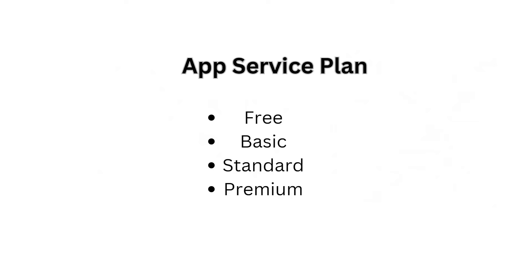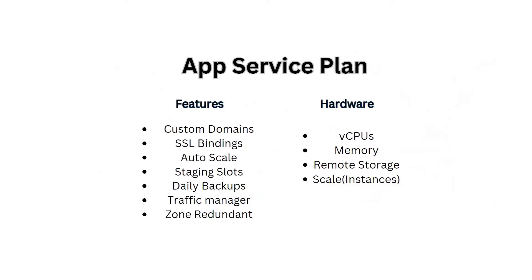Here App Service plan comes into the picture. Azure will offer different plans for our applications — for example, free App Service plan, basic App Service plan, standard, and premium. Based on the plan you choose, you will get certain hardware resources and features. If you choose a basic app service plan, you may get less CPU and memory and fewer features. If you choose a premium app service plan, you may get more CPU, more memory, and also more features. Based on the requirement, you can choose any app service plan and accordingly Azure will provision resources.